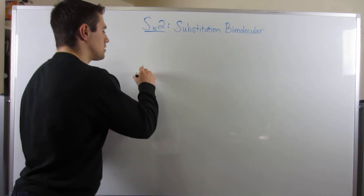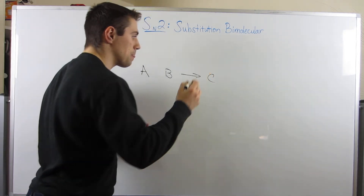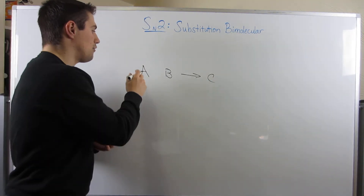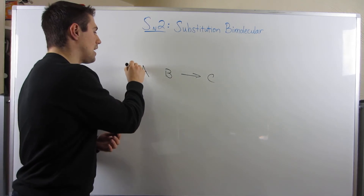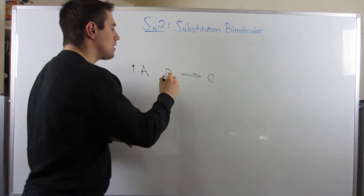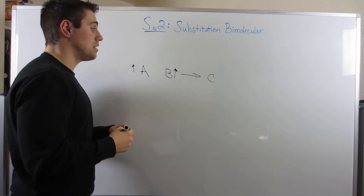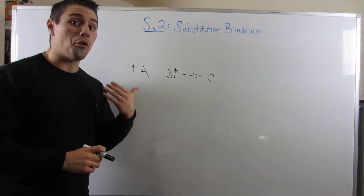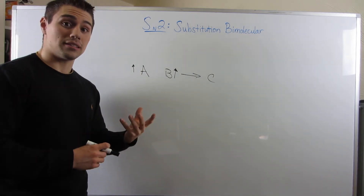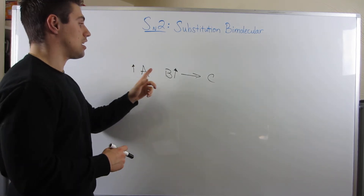Let's take structure A and structure B together to make structure C. The bimolecular aspect means that if we increase the concentration of A, the reaction goes faster, and if we increase the concentration of B, the reaction goes faster. Similarly, it would decrease if we decrease the concentration of A or B.